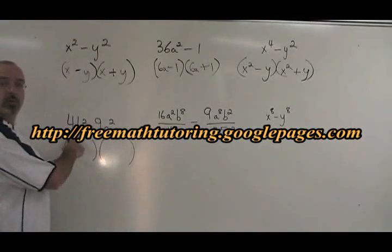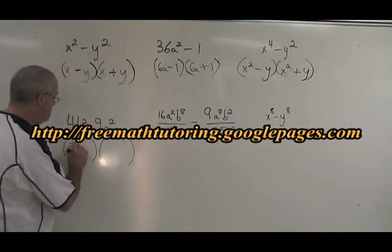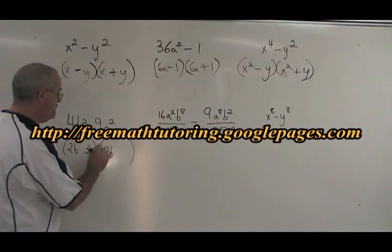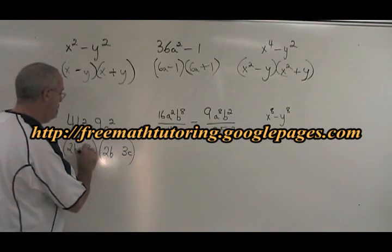Here, the square root of 4b squared is 2b. The square root of 9c squared is 3c. One minus, one plus.